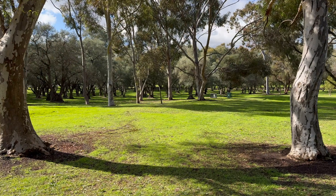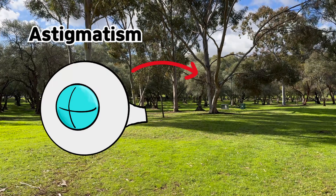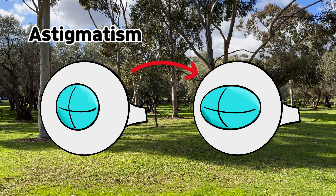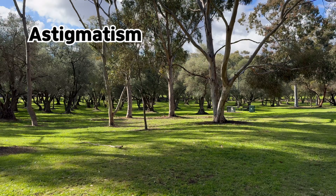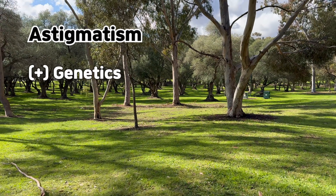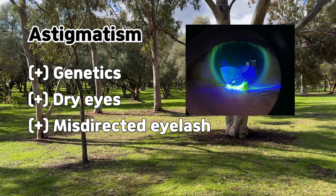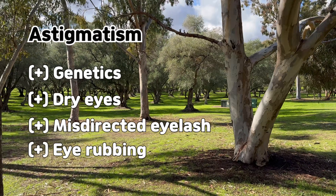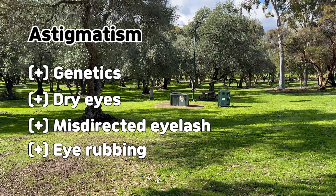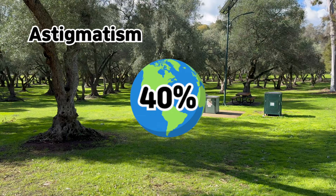For those that are unaware, astigmatism in its most simplistic form can be described as an oddly shaped cornea — the very front part of our eye. This can happen because of genetics, but can also arise from things such as dry eyes, a misdirected eyelash, or the excessive rubbing of our eyes. It's estimated that about 40% of the global population suffer from this condition.